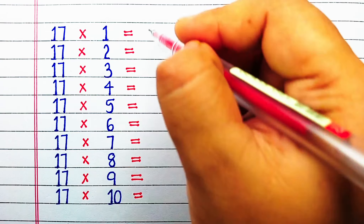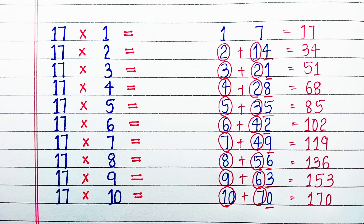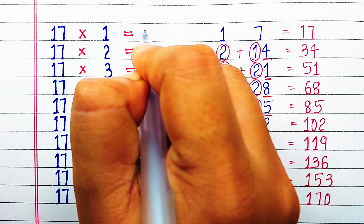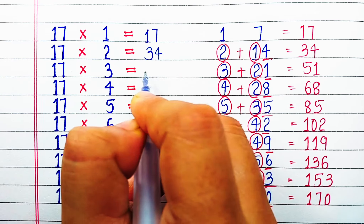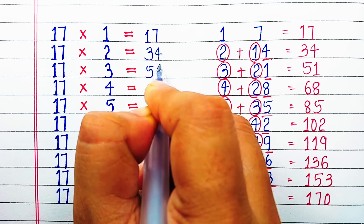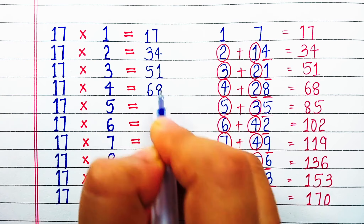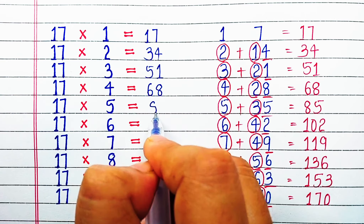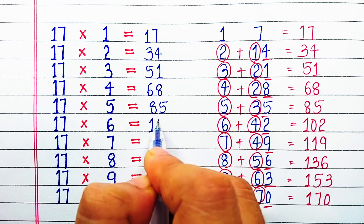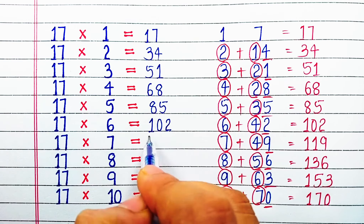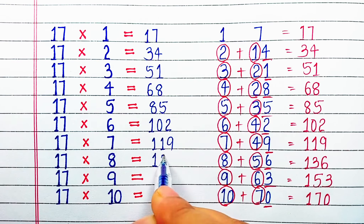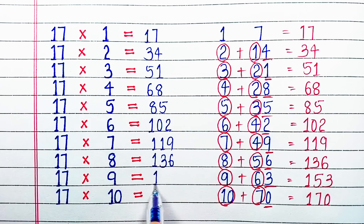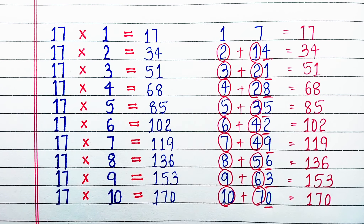With this we have got the table of 17. Let's start writing: 17×1=17, 17×2=34, 17×3=51, 17×4=68, 17×5=85, 17×6=102, 17×7=119, 17×8=136, 17×9=153, 17×10=170.